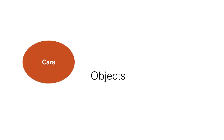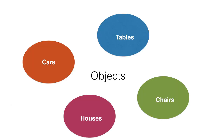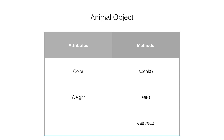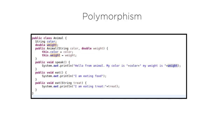Just as in real life we work with various objects like cars, tables, chairs, etc. to solve problems, similarly in object-oriented programming we think in terms of objects to solve problems. Let us take the animal object. It has attributes like color and weight, and methods like speak and eat. Let us create another eat method for when we are giving a treat to the animal for doing something good; the regular eat method is when they are eating regular food. So we have two eat methods. Let us see it in terms of a Java class.